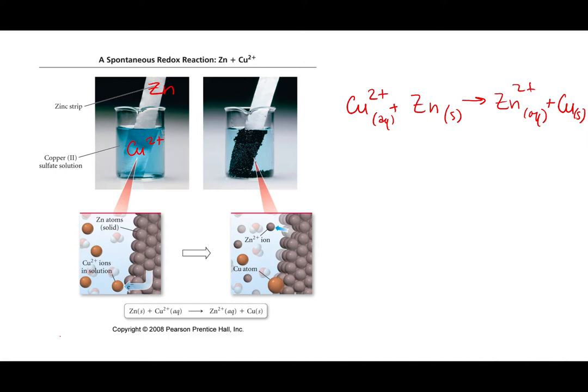So what's the oxidation state on this copper plus two? Plus two, yeah, it's plus two. Oxidation state equals charge. What about zinc? Zero. What about zinc plus two? Plus two. And then copper over here? Zero.